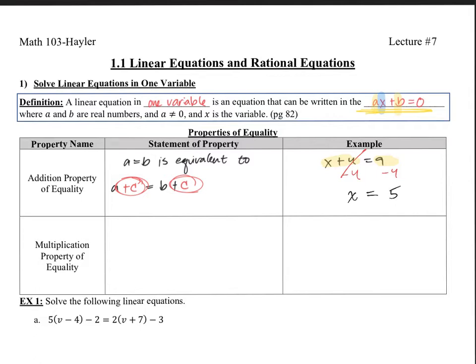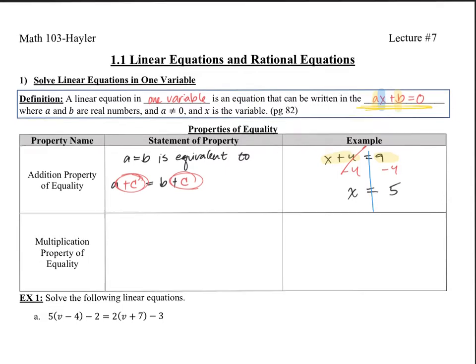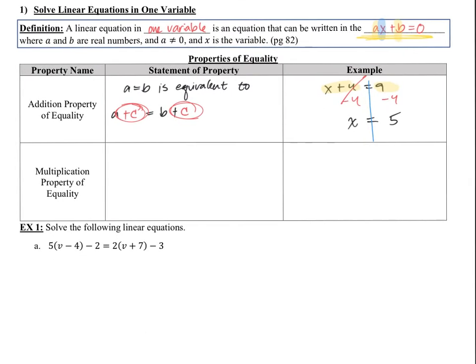For solving equations, some students have a hard time remembering the left side and right side of an equal sign. In this class, if you want to keep a small light version of the line continuing through your equal sign to remember the left side and the right side, you can go ahead and do that. Hopefully at the end of the course you will no longer need that line, but if you need to do it in the beginning, go ahead. Other professors may not allow that.